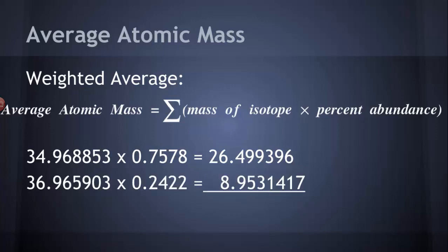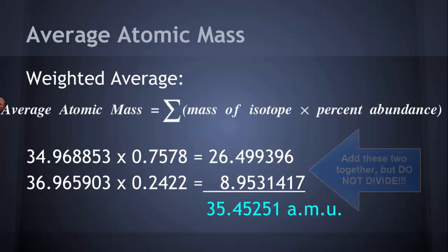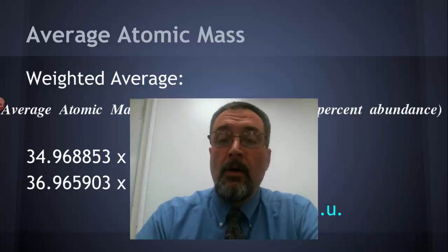We do the same thing with chlorine-37. We take the mass of chlorine-37, which is 36.965903. We multiply it by its percentage, 24.22%, or 0.2422, and we get 8.9531417. We add those together. That's what the sigma means. We add them together and we get 35.45251. Go back and look at your periodic table. The average mass of chlorine, according to the periodic table, is 35.453, which is exactly what we got, only we got it a little bit more accurately.